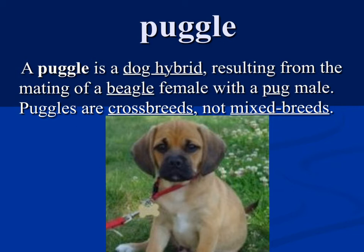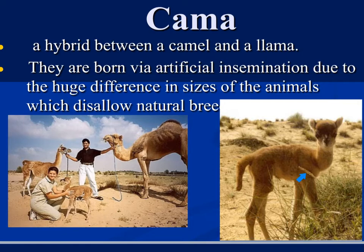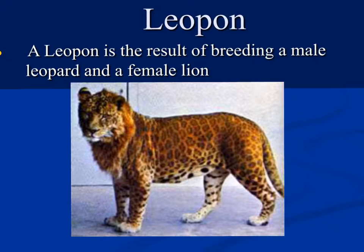This is a cama, and he's absolutely precious looking. You can see the size difference here — the parents are a camel and a llama. This is one of those situations that does not happen naturally on its own. It happens due to artificial insemination because of the big size difference between the parents.